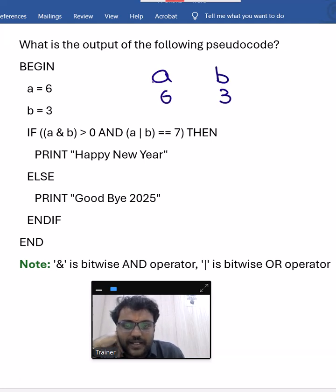Now we have an if-else condition. Whether it will print happy new year or goodbye 2025, we have to check. Here in the if condition they are given two things. A and B is that greater than 0, and A or B is it equal to 7 or not. We have to compare.